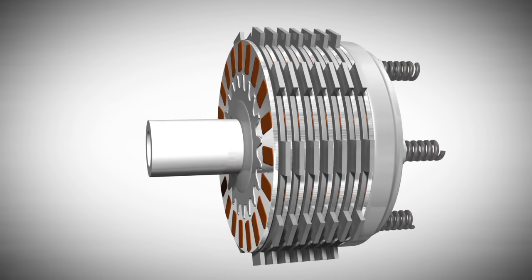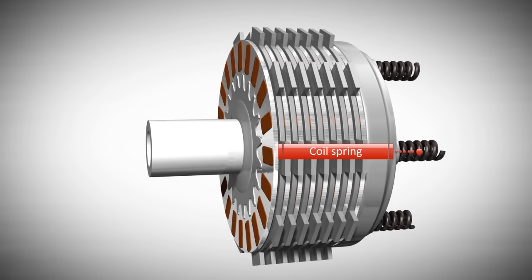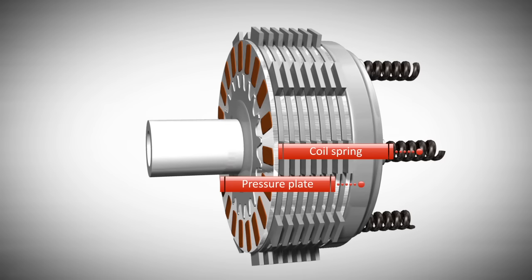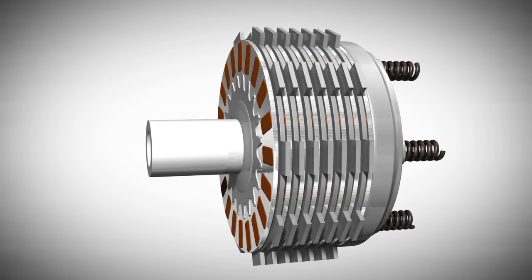Usually the disks are engaged by pressure through a set of four coil springs. These apply pressure on a pressure plate that consequently applies pressure to the clutch pack.